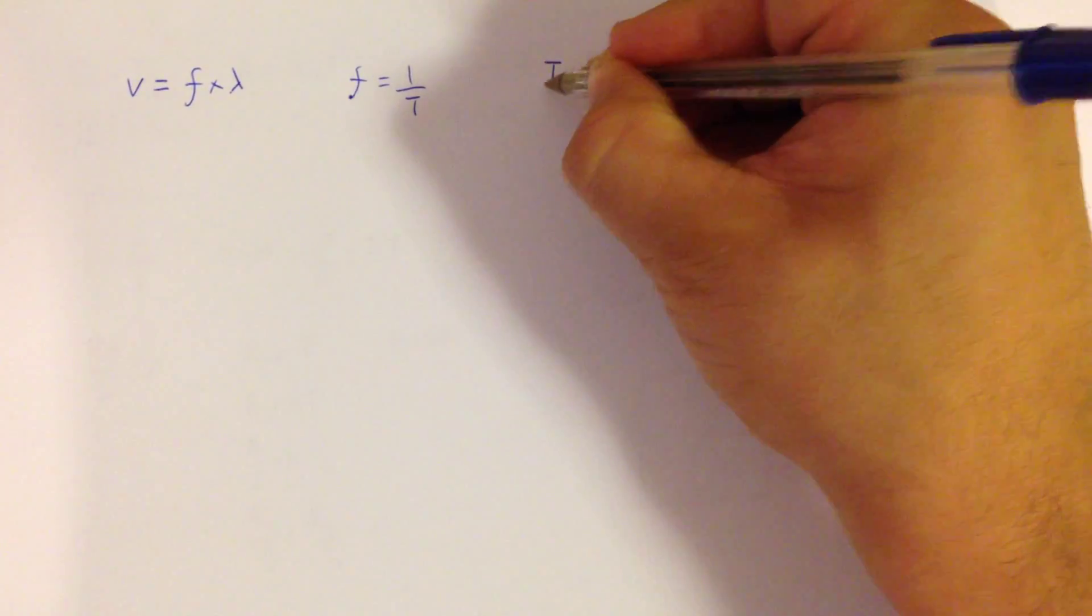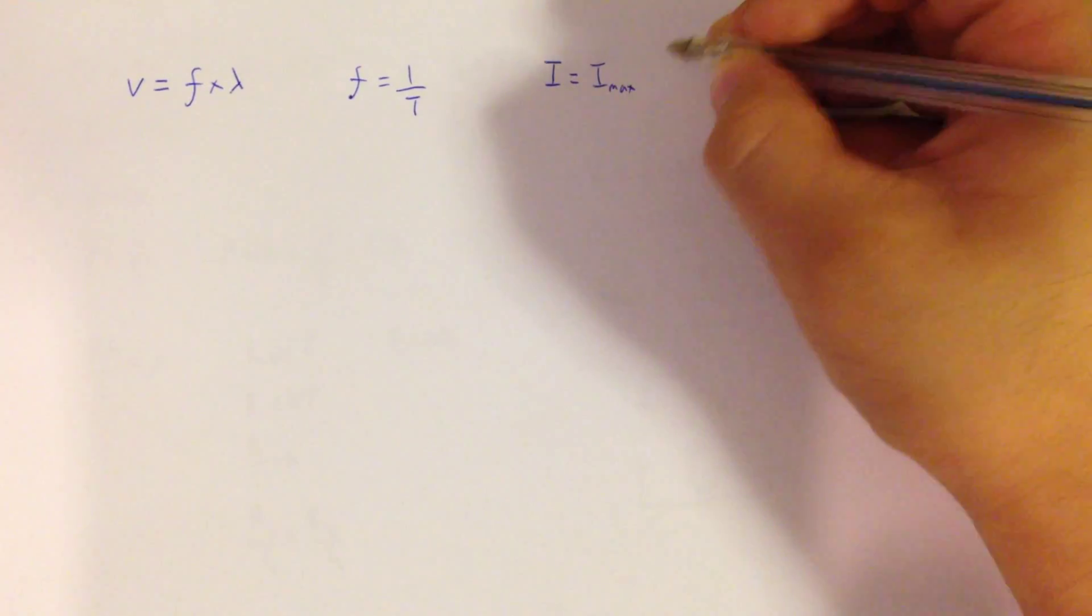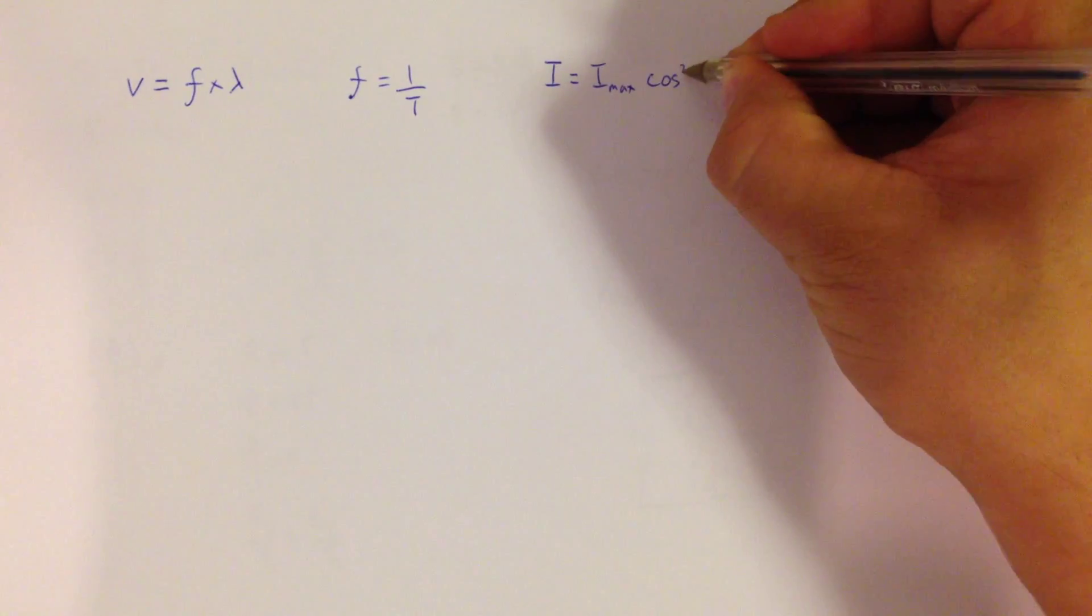We then get to Malus's law, which is that I, which is the intensity, is equal to I max, or I nought, which is the maximum starting intensity, multiplied by cos squared theta.